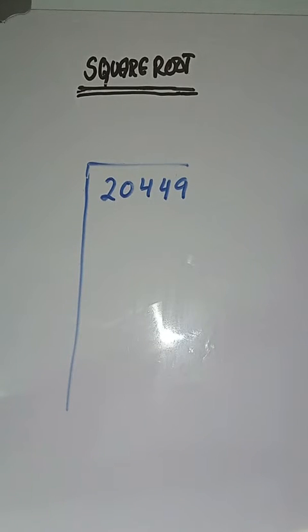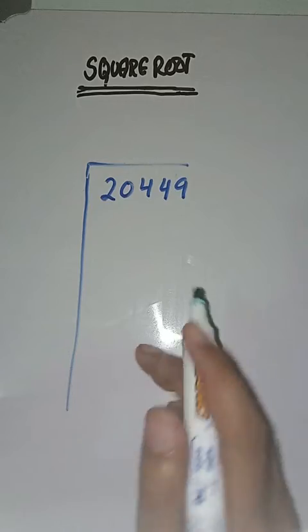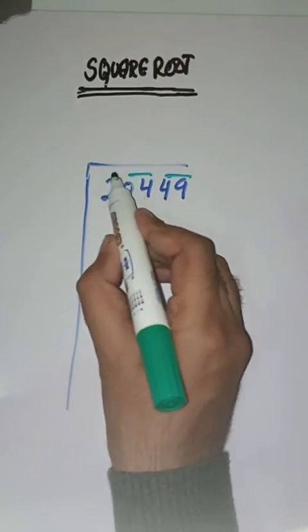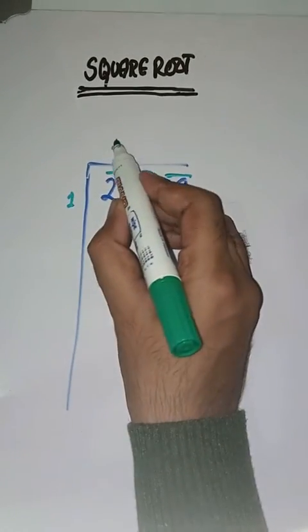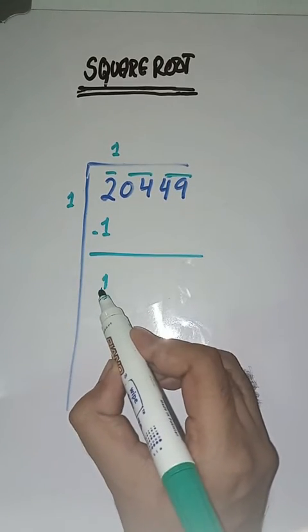First step is we have to make pairs from right to left like this. So, 1 times 1 is 1. Minus करेंगे, हमारे पास आजएगा 1.